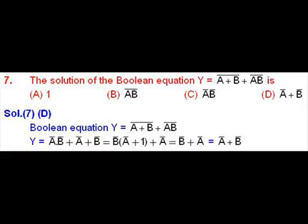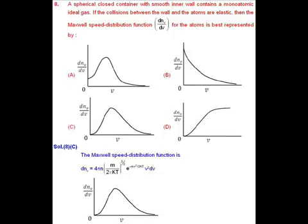That equals b bar in bracket a bar plus 1 bracket plus a bar. We know that a bar plus 1 equals 1. So y equals b bar plus a bar, that is equals to a bar plus b bar. Option D is correct.